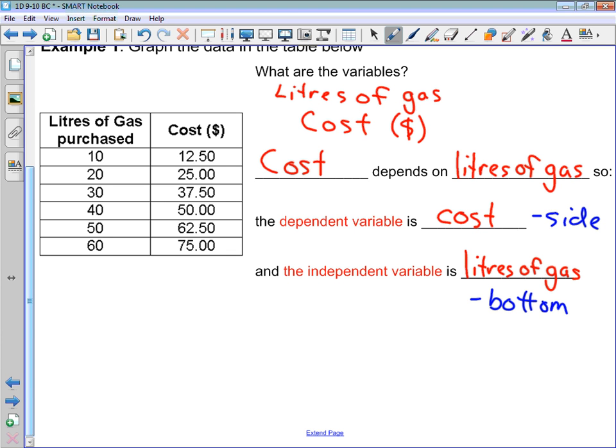And this is also reflected in our table here. In a table, almost always the independent variable is the first thing in the table, and the dependent variable is in the second column. So it's independent and then dependent.